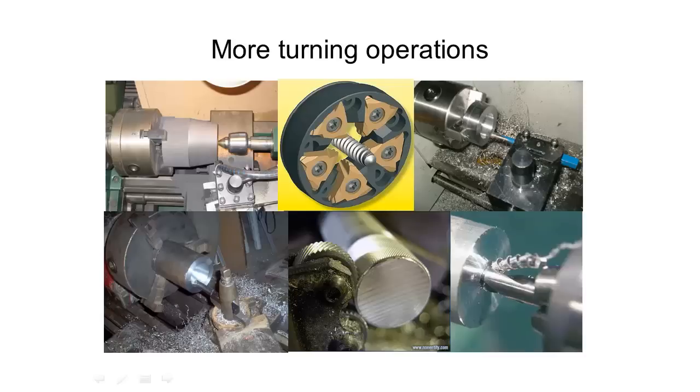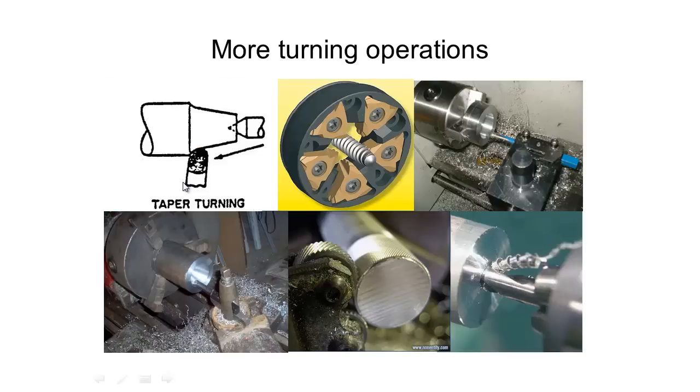So now we're just going to take a look at some more turning operations. The first one here is tapered facing. So we have our tool here, and it moves along with our carriage angled. We can now move along and create a gradually tapered surface. So similar to just our normal turning operation, however, we've just added an angle on the carriage.